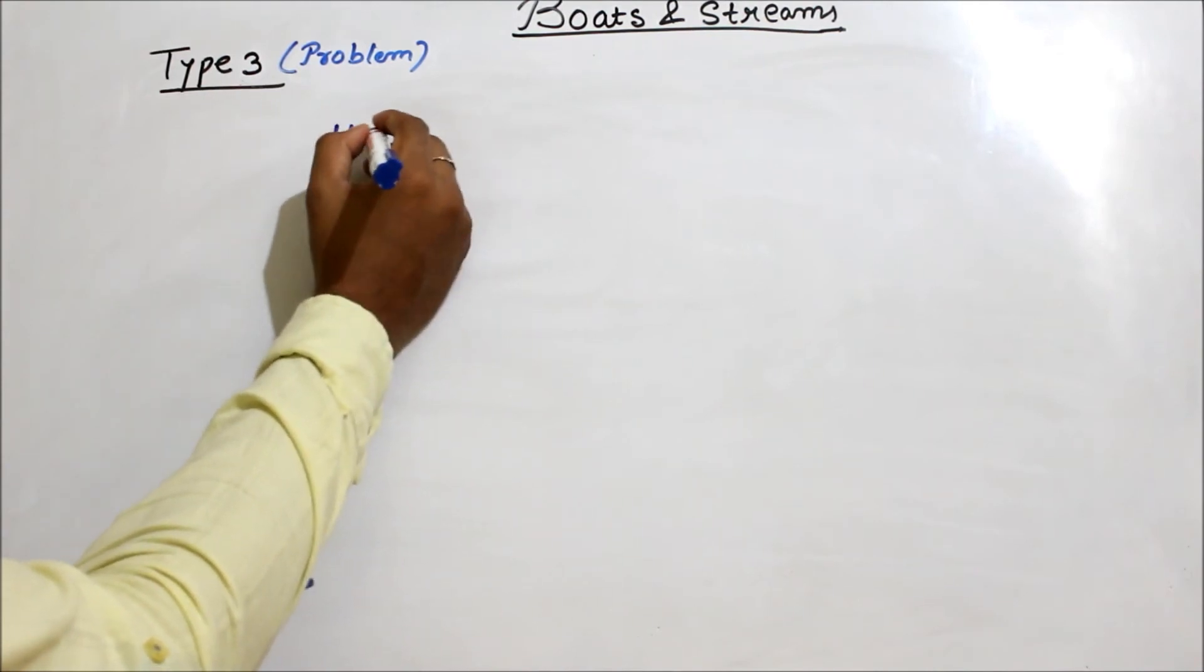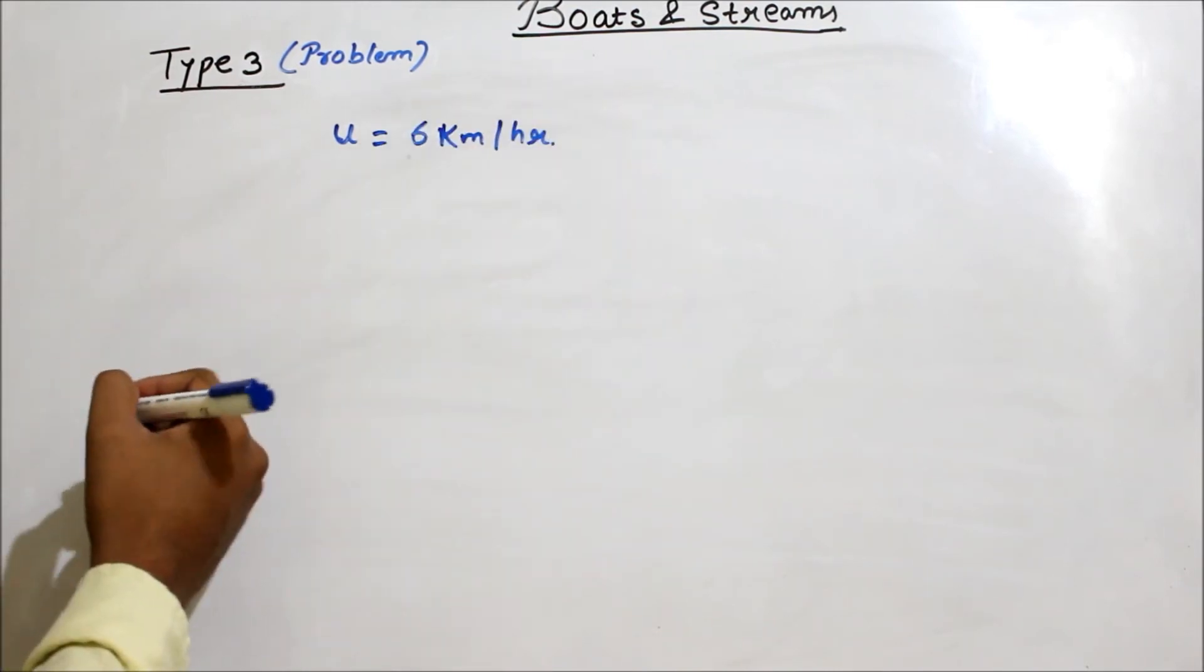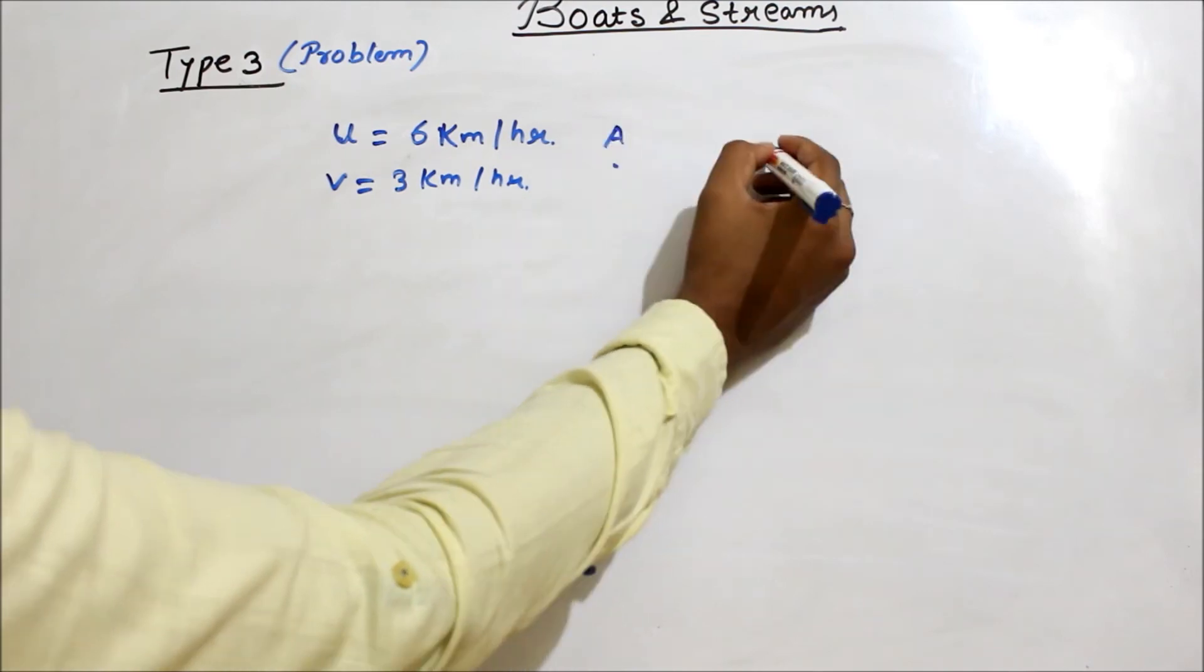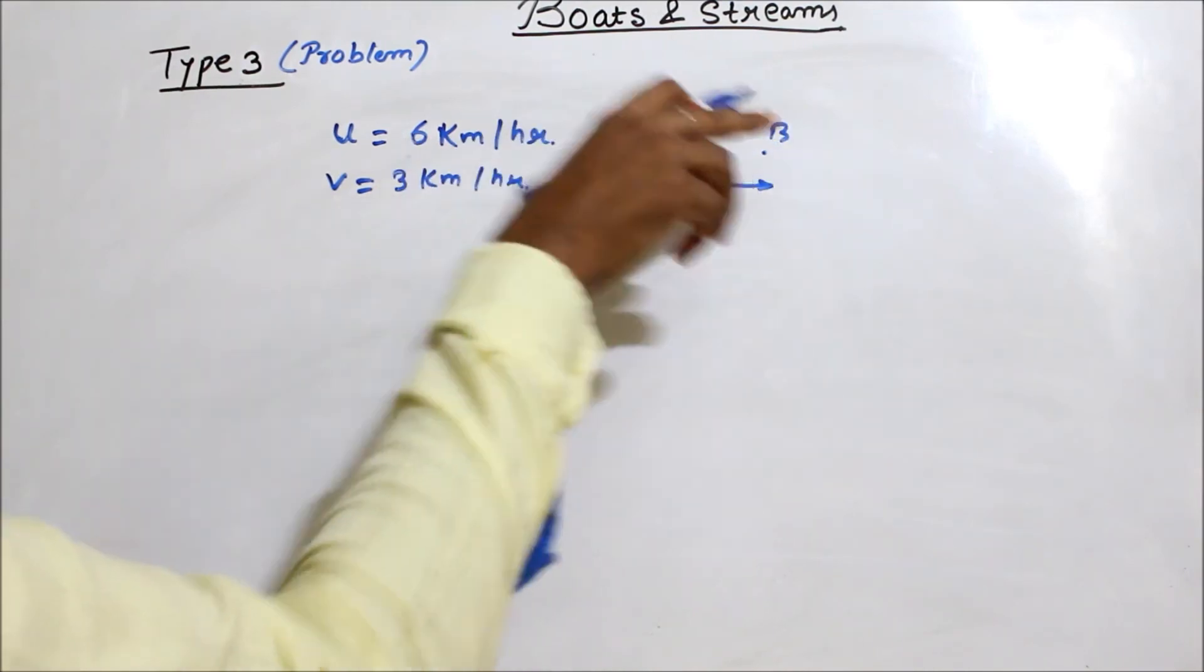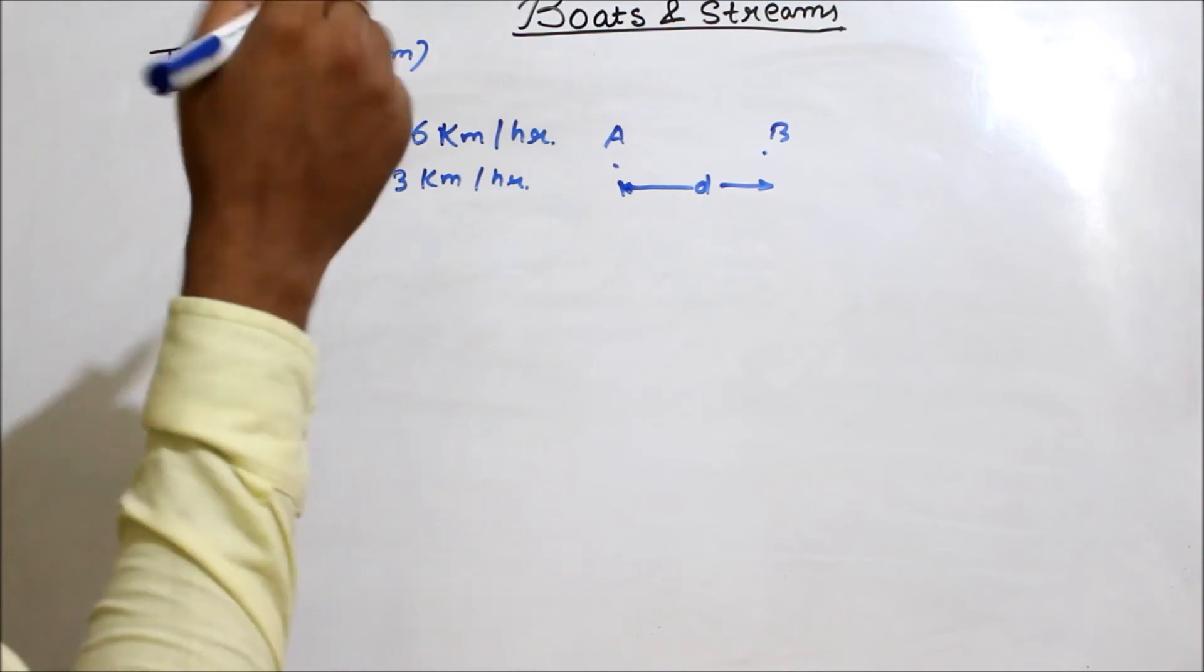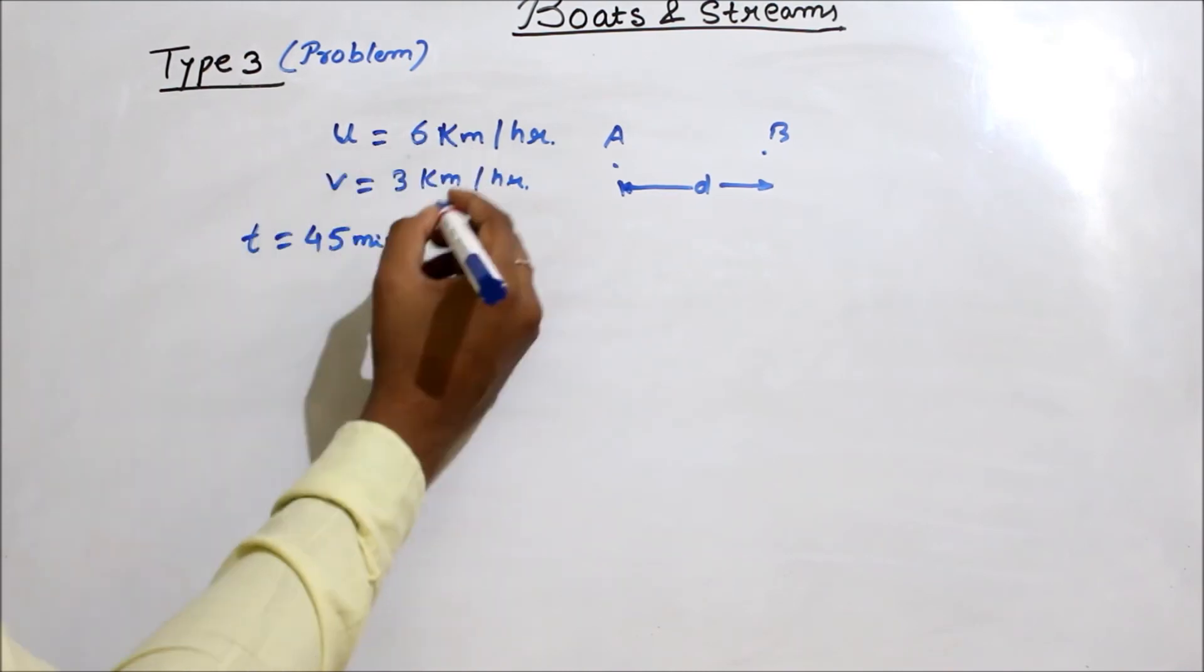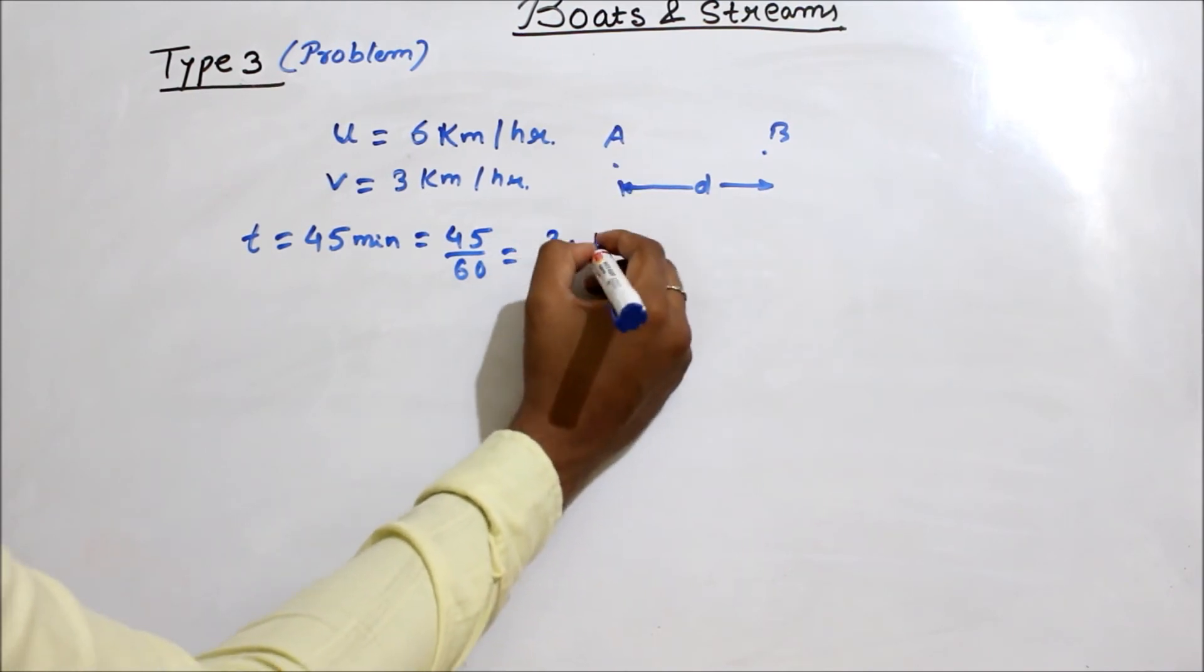The speed of man in still water is 6 km per hour, u equals 6 km per hour. The speed of stream is v equals 3 km per hour. The total time is 45 minutes. So convert it to hours: 45 by 60, which comes out to be 3 by 4 hours.